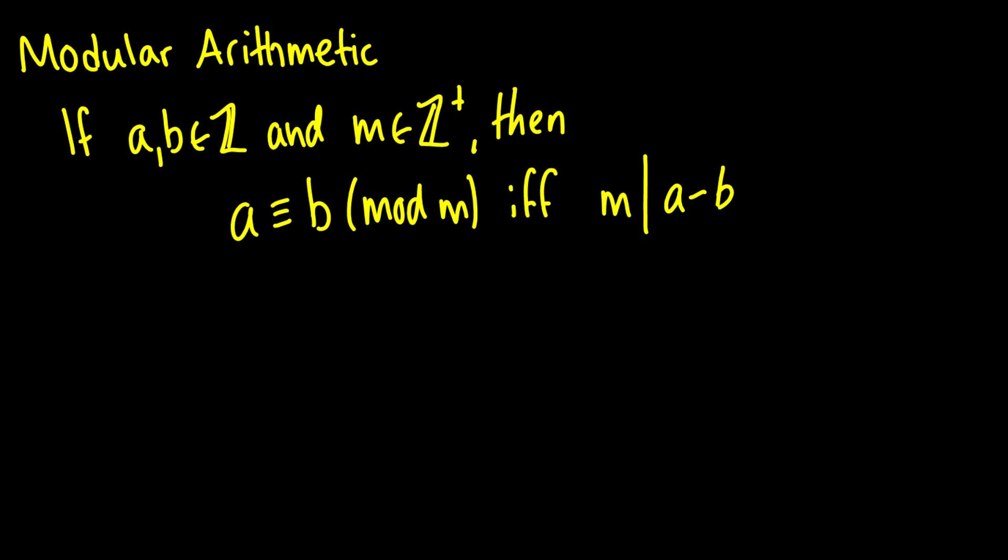I should probably define it for you. If A and B are integers and M is a positive integer, then A is equal to B modulo M if M divides A minus B.